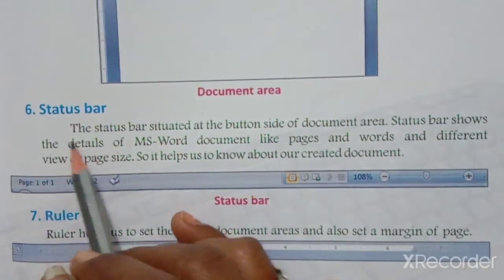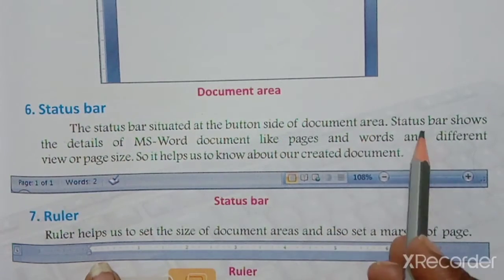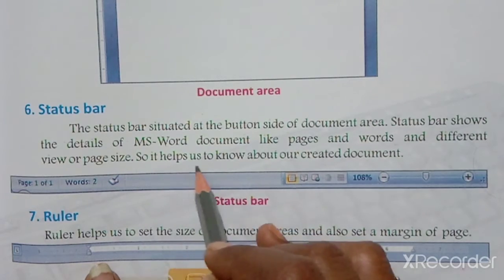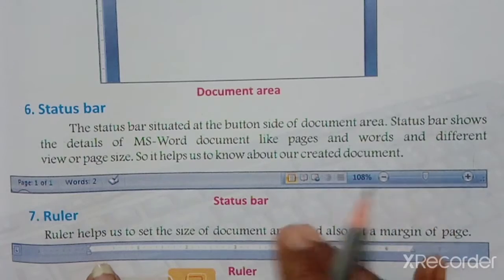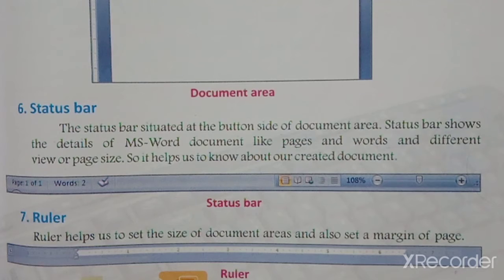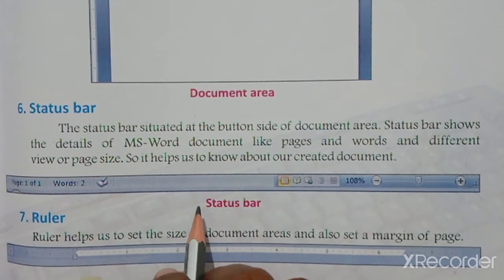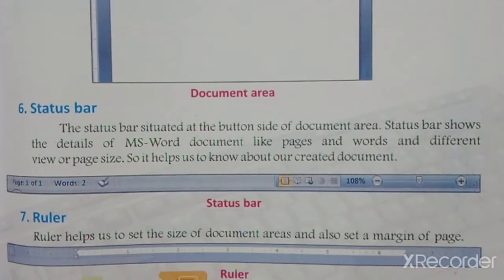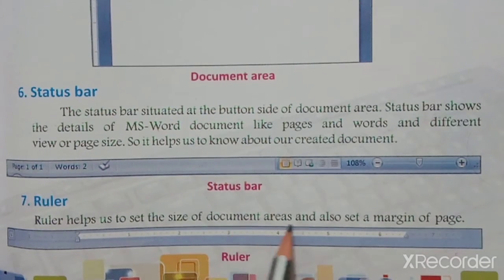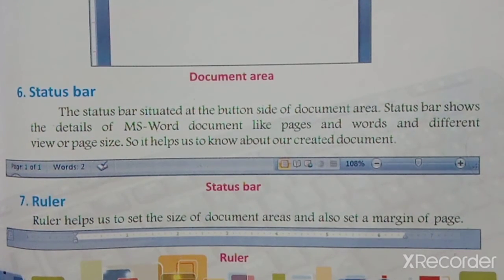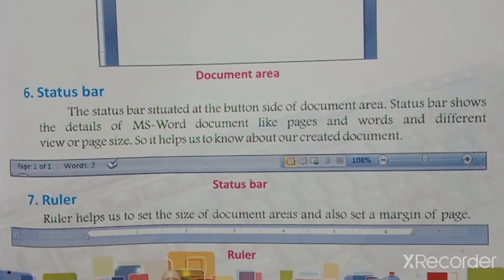The Status Bar is situated at the bottom side of the document area. It shows the details of the MS Word document, like pages, words, different views, and page size. This helps us to know about the document we are creating. Finally, the Ruler helps us to set the size of the document area and also set the margin of the page on both sides.